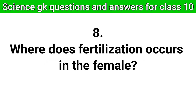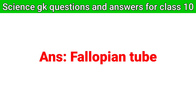Question number eight: where does fertilization occur in the female? Answer: fallopian tube.